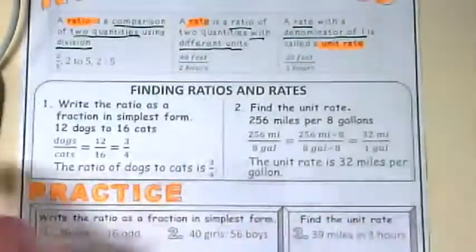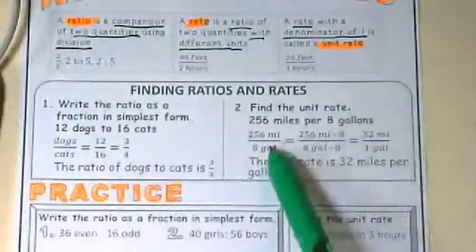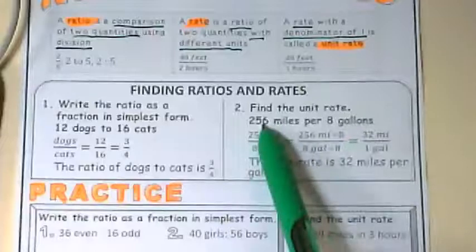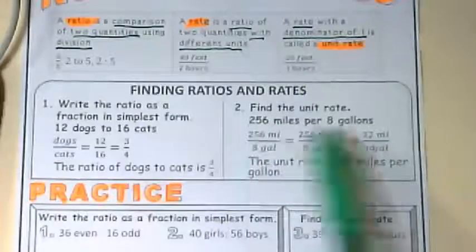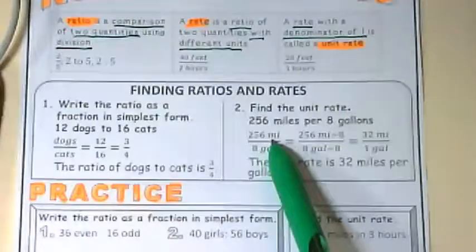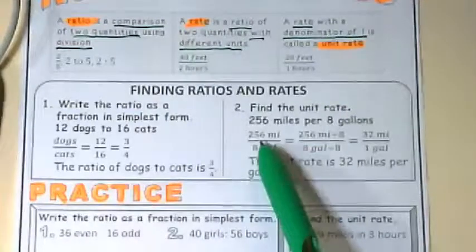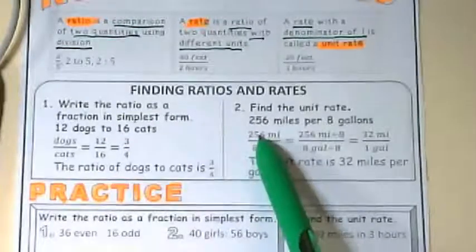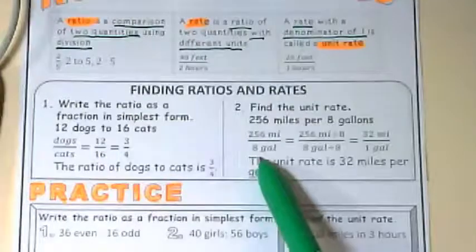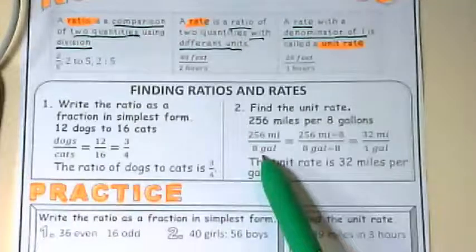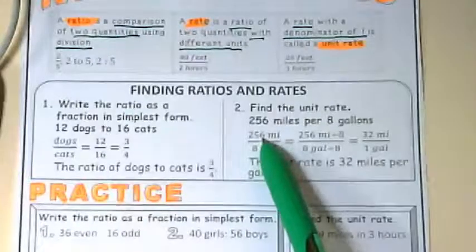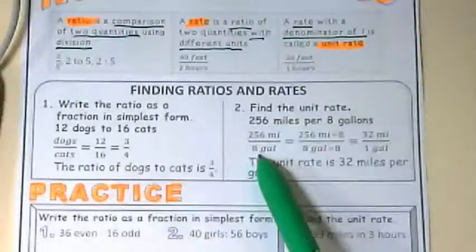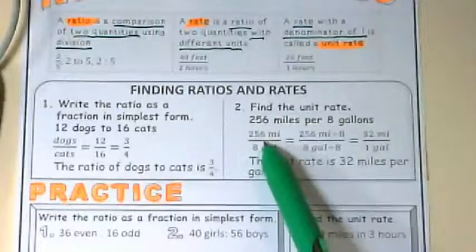All right. The next example is finding the unit rate. In this case, we have miles per gallon: 256 miles per 8 gallons. Here we have miles on the top, gallons on the bottom, and they basically have taken this straight from the words and put it. Whatever is first usually ends up on top, and whatever is second usually ends up on the bottom. Distance is always on top. Money is always on top. We'll see some more examples.